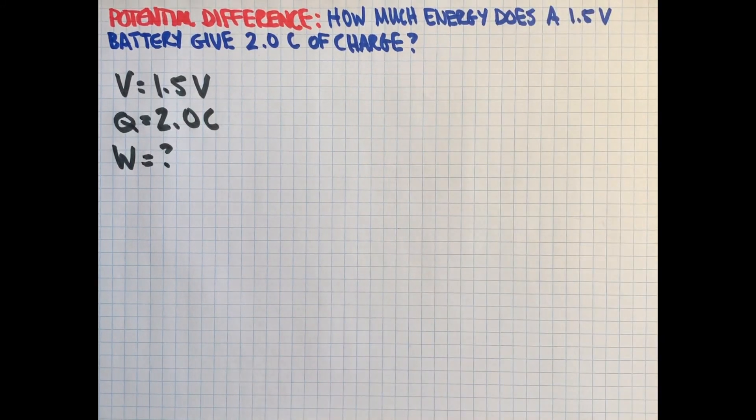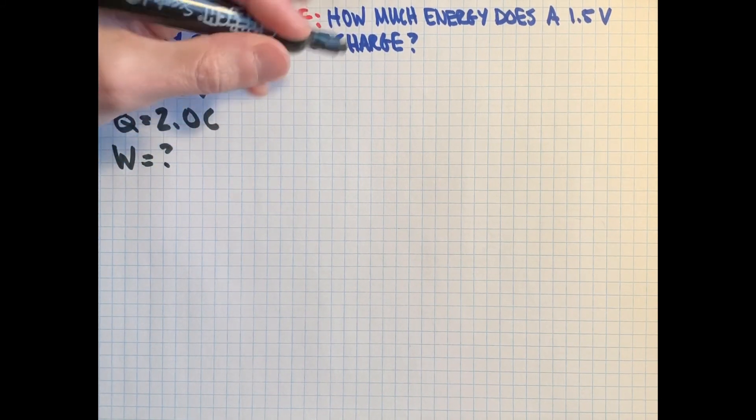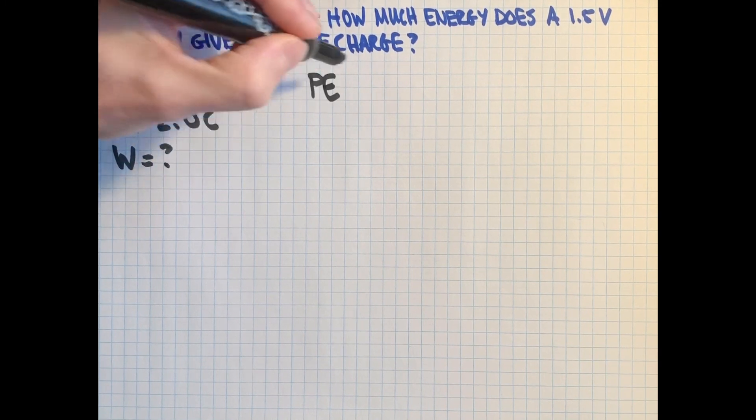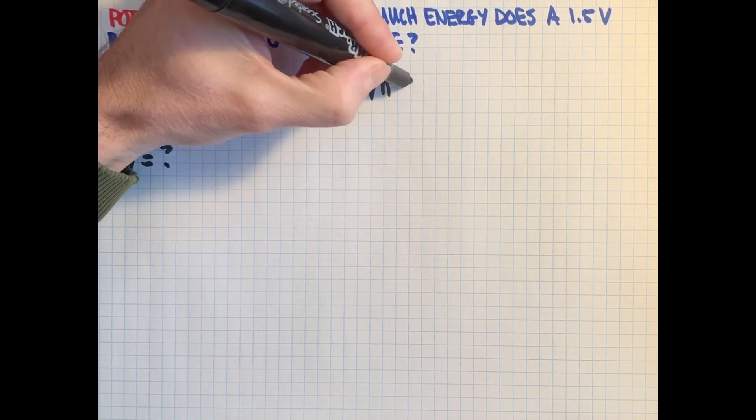Voltage is like a combination of gravity strength or the gravitational field and height when we did potential energy. So if you recall that potential gravitational energy was MGH...